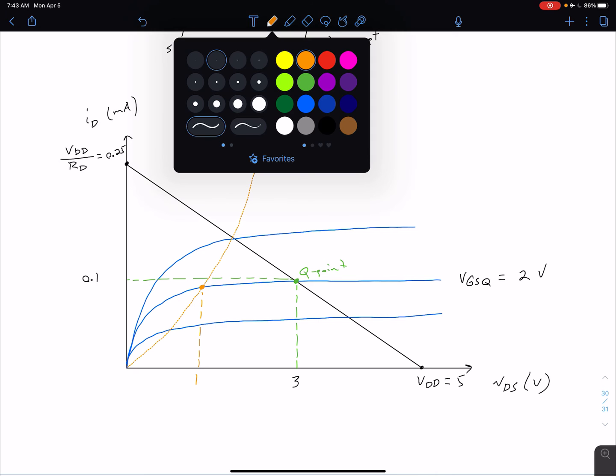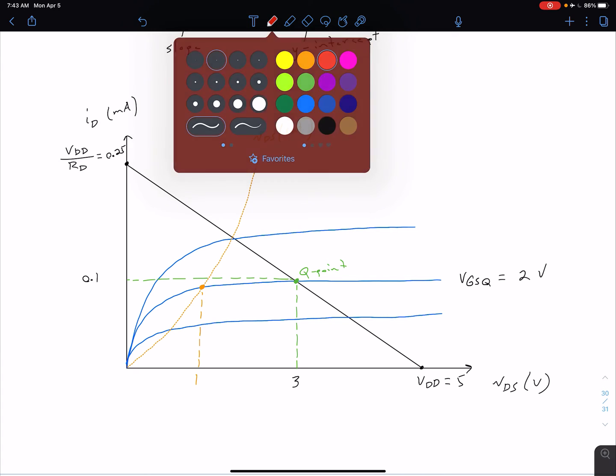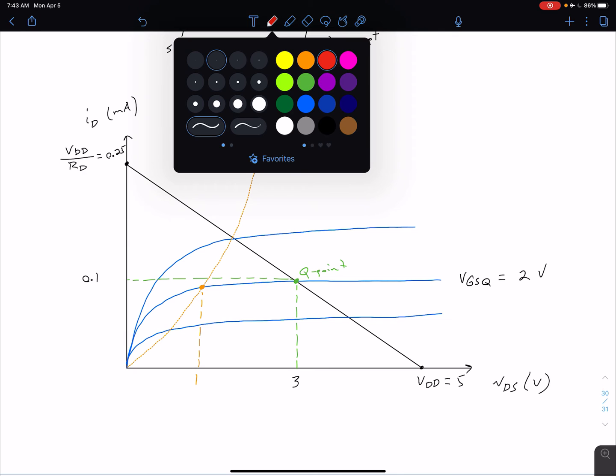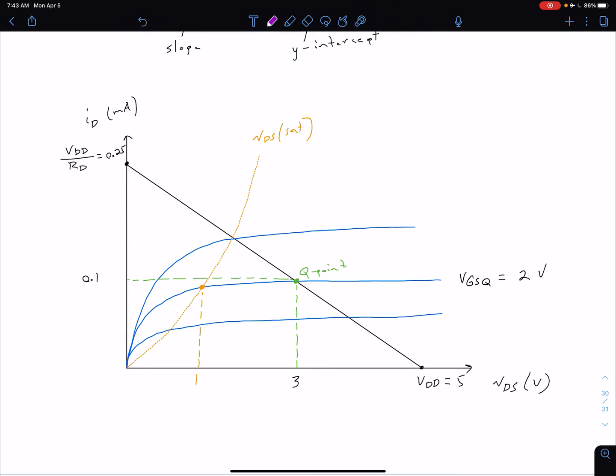Let's go ahead and mark our general areas of operation or our general operation modes. Maybe purple will stand out a little better here. We have up here, this area of our load line is going to be our non-saturation region. Remember that could also be called the triode region or sometimes the ohmic region. And then everything else down here is going to be our saturation region.